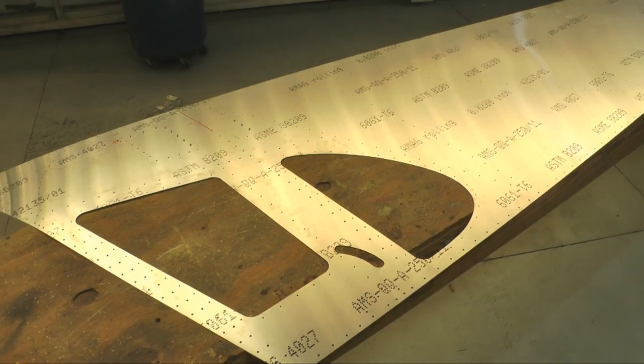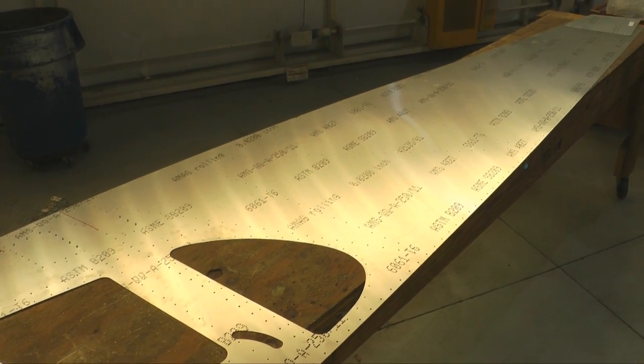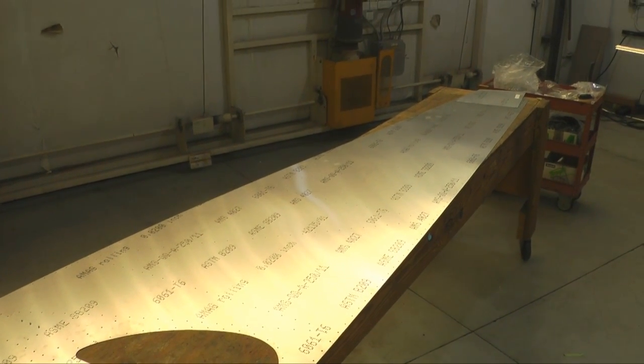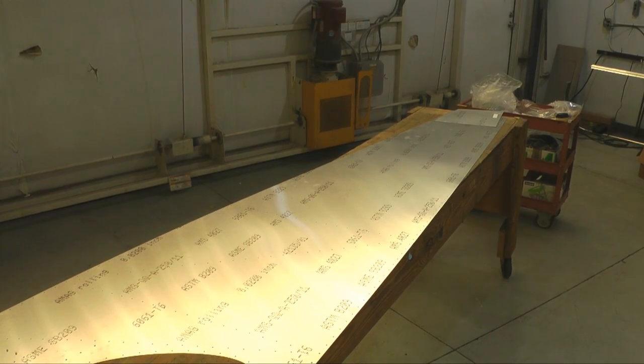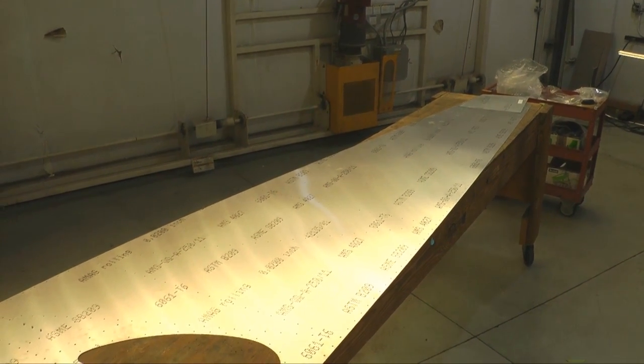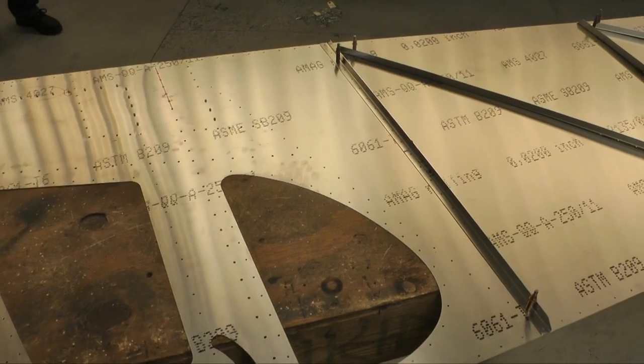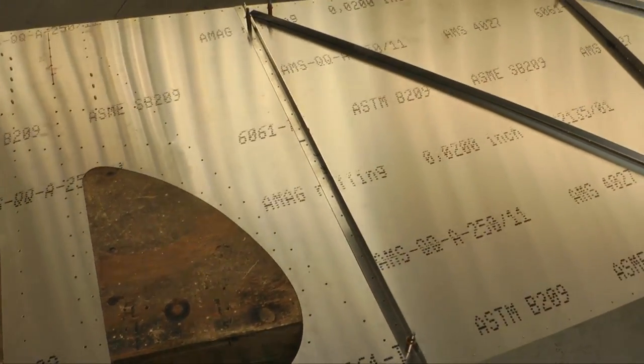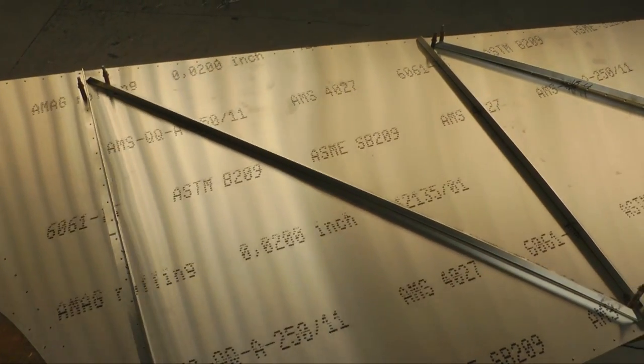Now we begin the side skin. We have that all laid out. We want to identify and mark one side being the inside versus the outside, and left and right. And then we will go fetch the L angles that will support the skin. Here we have placed the L angles. Now you want to be careful. The first L angle, the flange, goes to the rear. Check your plans. And then for the rest of them, the flange goes forward.